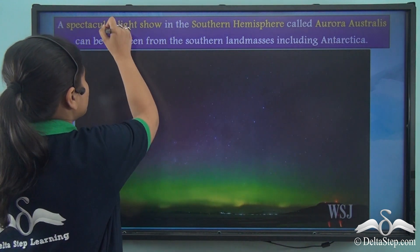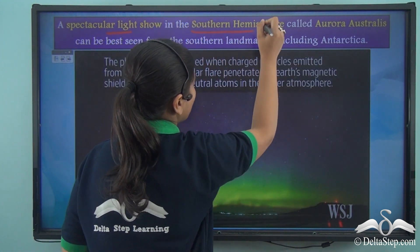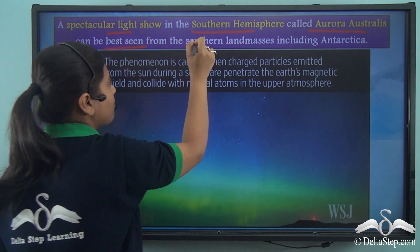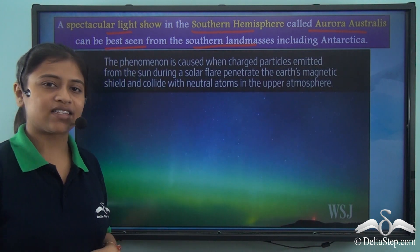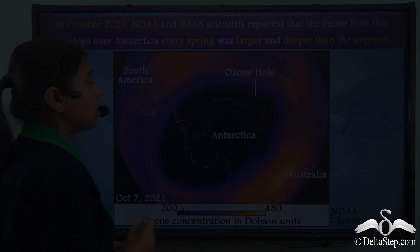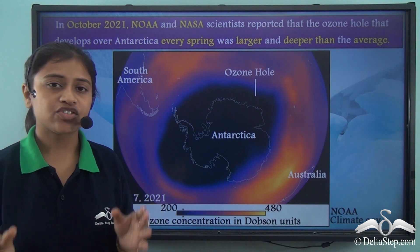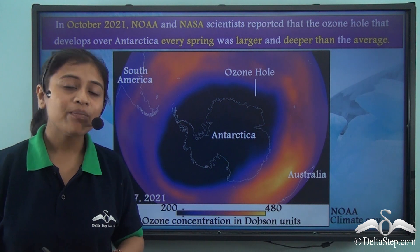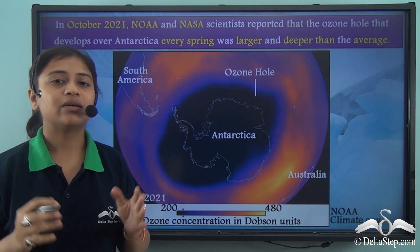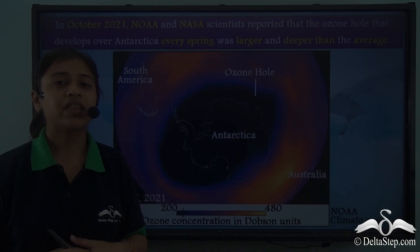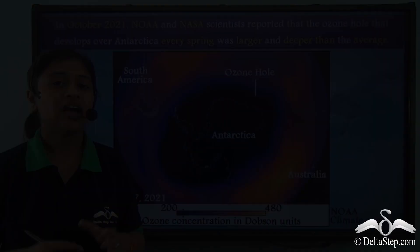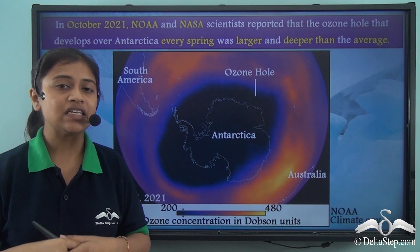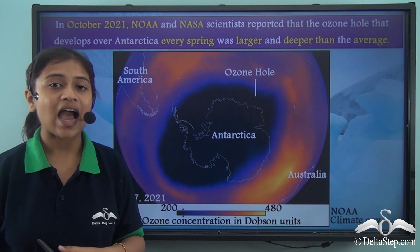With such a unique climate, Antarctica also offers a spectacular light show. The Aurora Australis, or southern lights, can be best seen from southern landmasses including Antarctica. However, there is also a serious threat — the ozone hole that occurs over Antarctica every spring and is getting worse.